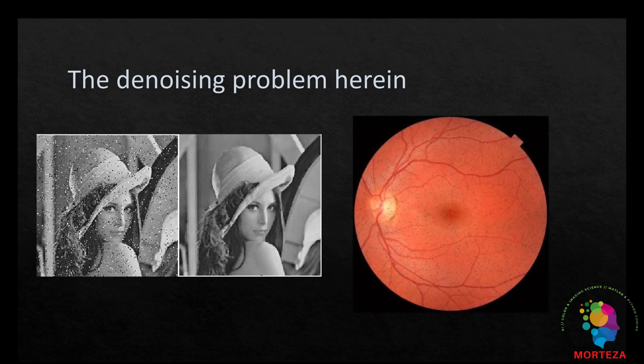For example, let's look at this noisy image of retina. You could clearly see the speckles on the image, and what we want to do is to denoise this image without blurring the whole image.